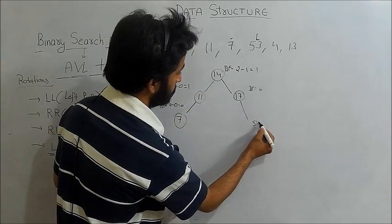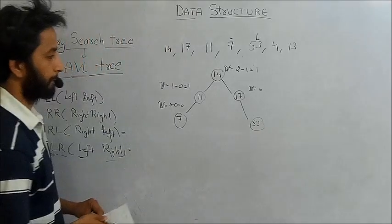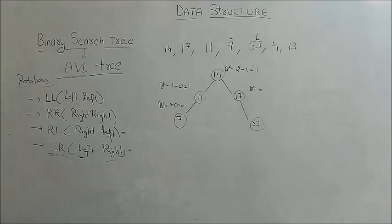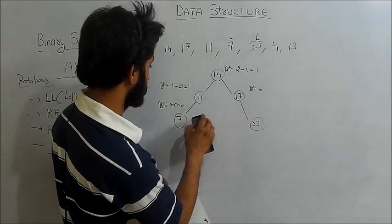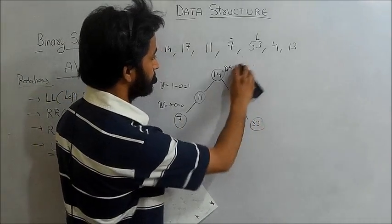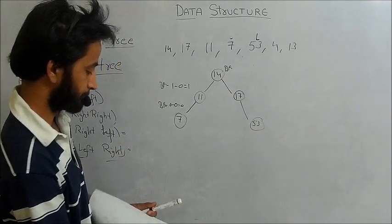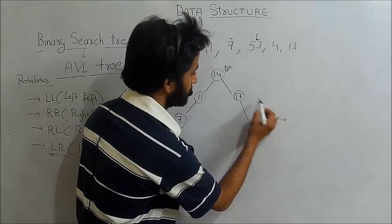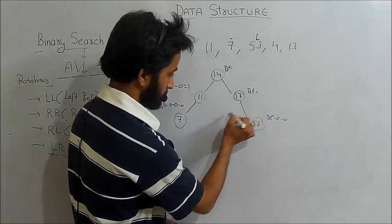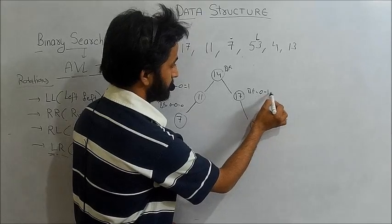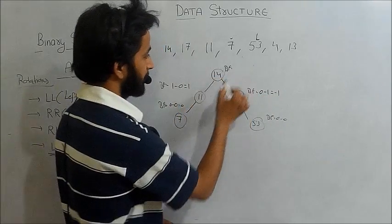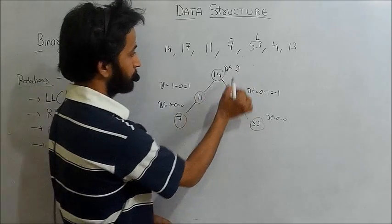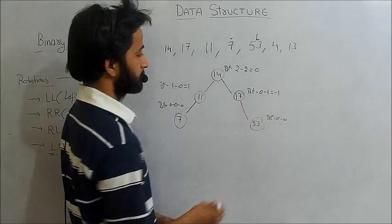After 7, we insert 53 to the right side. The balance factors update: BF at 17 becomes zero minus zero, BF at 53's parent becomes zero minus one which is minus one, and at the root the balance factor becomes two minus two which is zero. Still okay for the AVL tree.